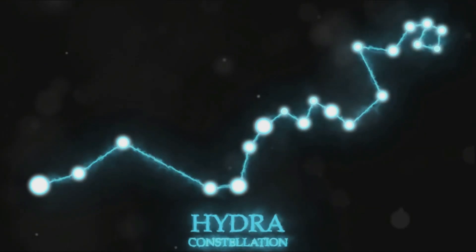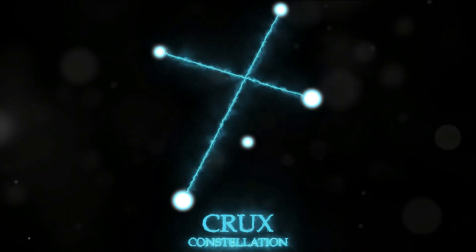First up, meet Hydra, the water snake. It's the largest constellation, stretching across an incredible quarter of the sky. If Hydra were a giant, it would be like a giant so tall it could play jump rope with a rainbow.